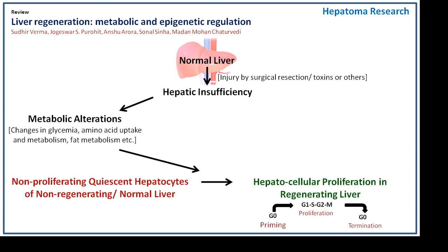The metabolic alterations include changes in glycemia, amino acid uptake and metabolism, fat metabolism, etc. These metabolic perturbations are physiologically relevant for promoting hepatocellular proliferation and regeneration.